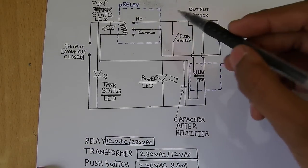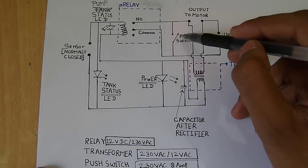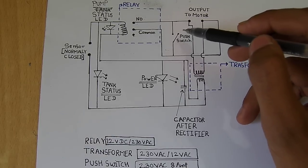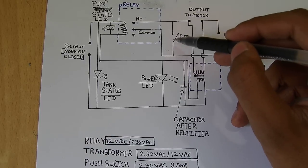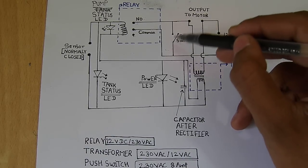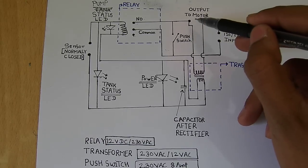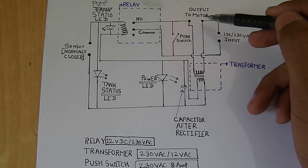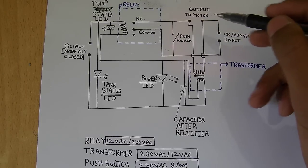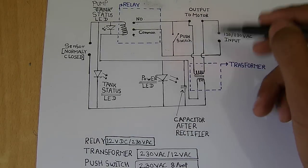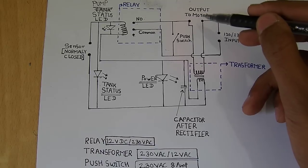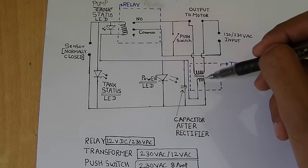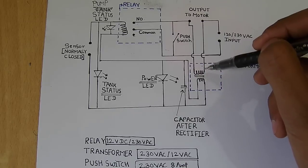Basically how this circuit works is when you trigger using the push button, current flows from this path through the motor, so the motor will be turned on but for a temporary time. As soon as you're turning on this motor, you're also turning on this transformer. The transformer will convert 230 volts to 12 volts and this will power the relay coil.